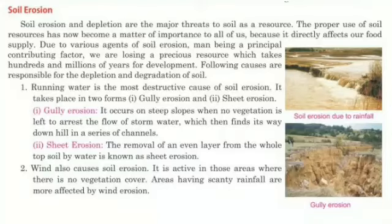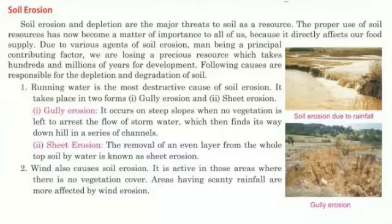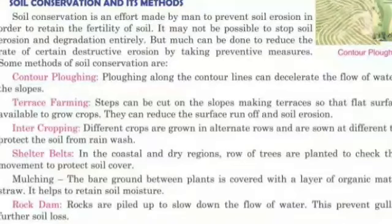The second cause is wind. Wind also causes soil erosion. It is active in areas where there is no vegetation cover. Areas having scanty rainfall are more affected by wind erosion. Human activities like deforestation, overgrazing, and overuse of chemical fertilizers and pesticides also contribute a lot to soil erosion.